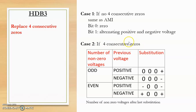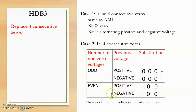But if there are 4 consecutive zeros, we need to check the number of non-zero voltages, i.e., the number of positive and negative voltages. If the count of non-zero voltages is odd and the previous voltage is positive, the substitution will be 0, 0, 0, positive. If it is odd and the previous voltage is negative, the substitution will be 0, 0, 0, negative. If the count is even and the previous voltage is positive, the substitution will be negative, 0, 0, negative.